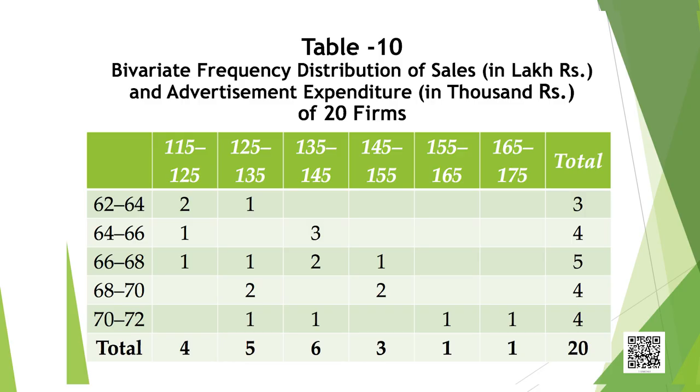Now we will discuss the bivariate frequency distribution. Very often, when we take a sample from a population, we collect more than one type of information from each element of the sample. For example, suppose we have taken a sample of 20 companies from a list of companies based in a city, and we collect information on sales and expenditure on advertisements from each company. In this case, we have bivariate sample data. Such bivariate data can be summarized using a bivariate frequency distribution, which can be defined as the frequency distribution of two variables.